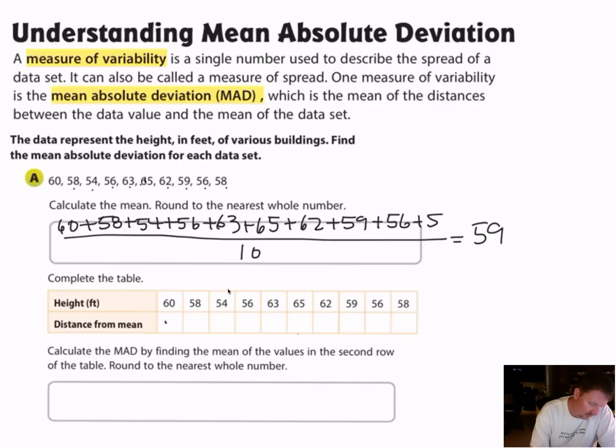58 is also one away. 54 is five away. 56 is three away. 63 is four away. 65 is six away. 62 is three away. 59 is dead on, that's zero away. 56 is three away. And 58 is one away.